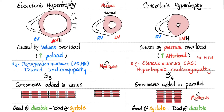Anytime there is volume overload in any chamber of the heart, we expect to find an S3 heart sound and expect the chamber to undergo dilation and eccentric hypertrophy. But when we find pressure overload — increased afterload rather than preload — we expect the chamber to undergo concentric hypertrophy and we predict an S4 gallop rhythm. An eccentrically hypertrophied chamber is good at diastole because it's big and dilated, but bad at systole because the wall is thin. Conversely, concentric hypertrophy produces a thick muscle wall — very good at systole, but bad at diastole.